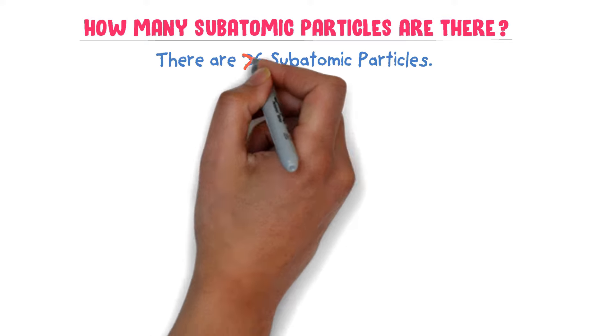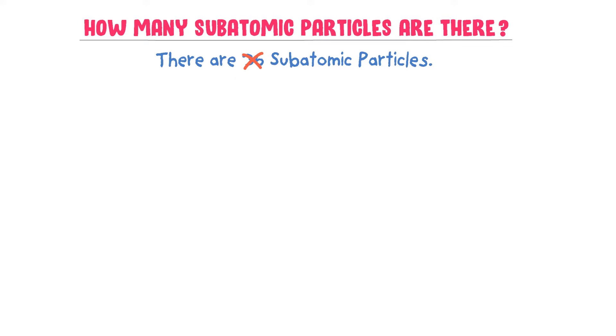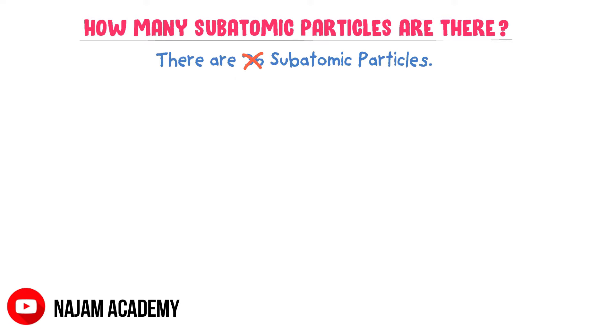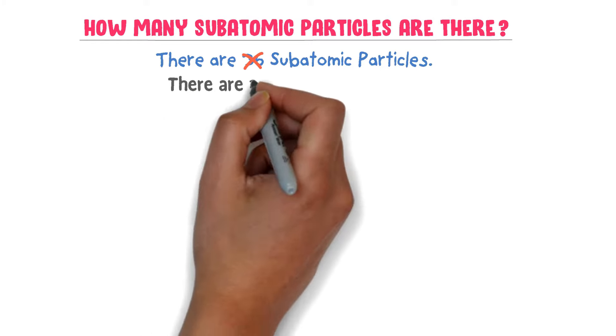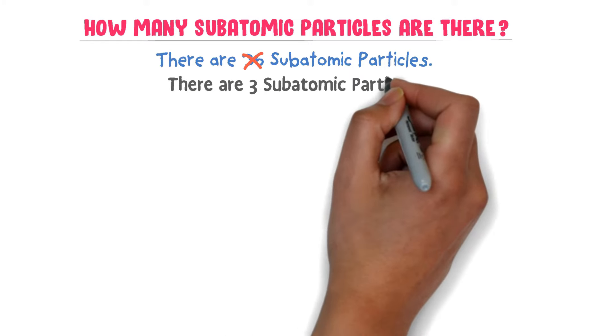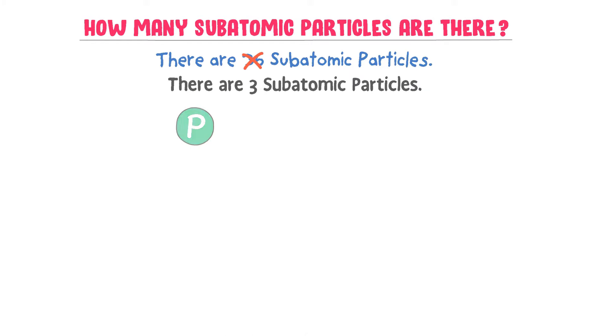But at this level, we do not study all these 36 subatomic particles. We say that there are three subatomic particles: proton, electron, and neutron.